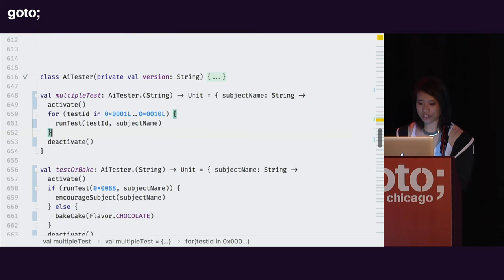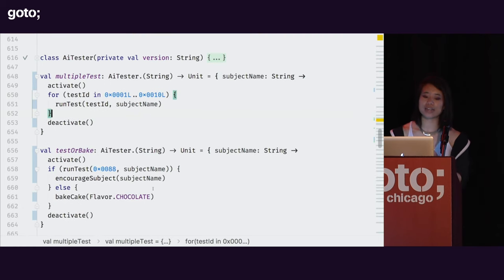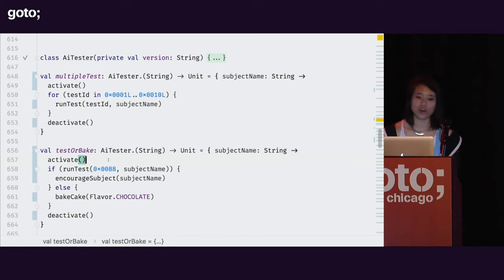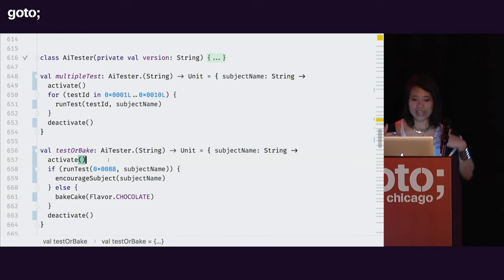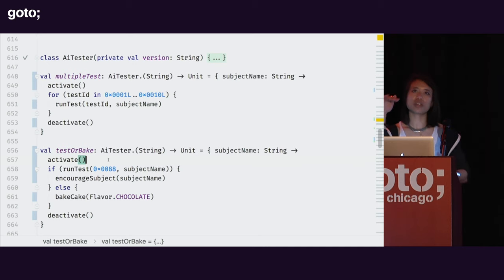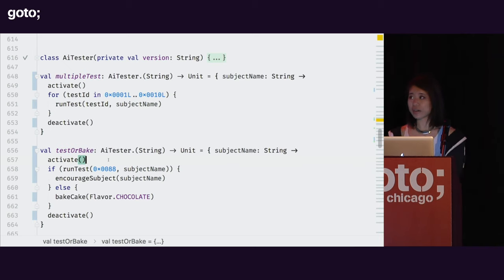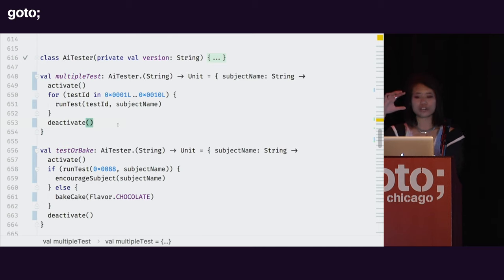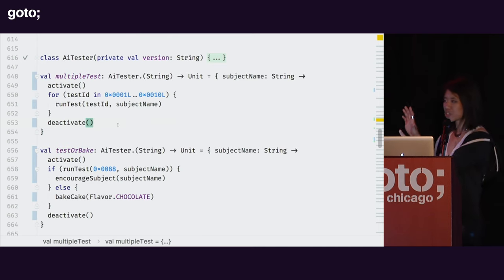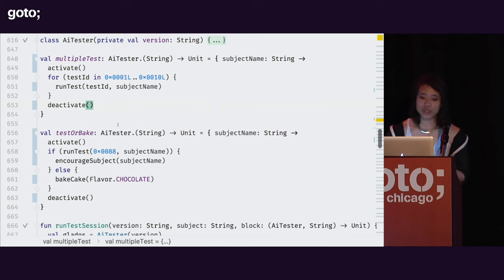And now because the tester that was a parameter is now the 'this' inside, I can much more easily call these methods inside without any qualifications. How many times have you written initialization code where you're calling methods on the same object over and over again? It gets repetitive and creates visual noise. It's again playing with the idea of scope functions as creating this little scope — this little idea that: hey, I'm doing a bunch of things on this thing.